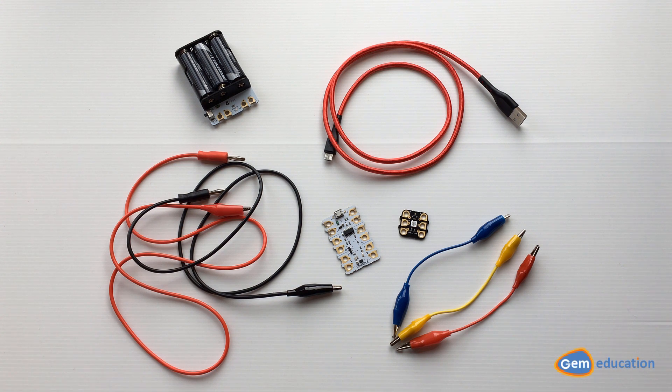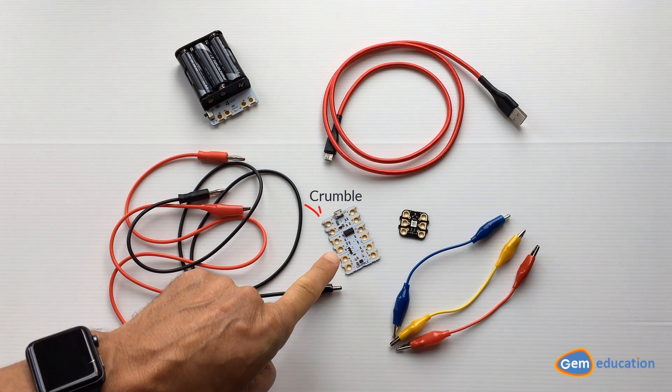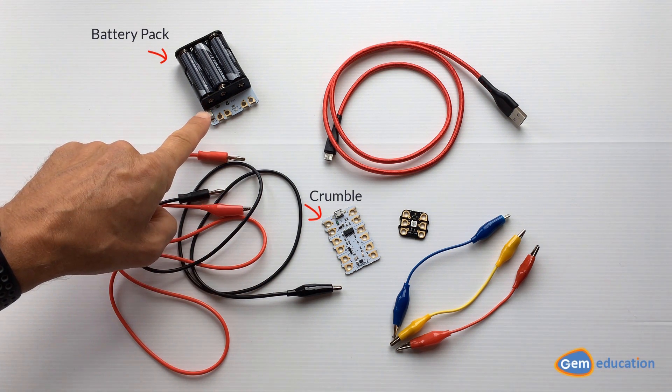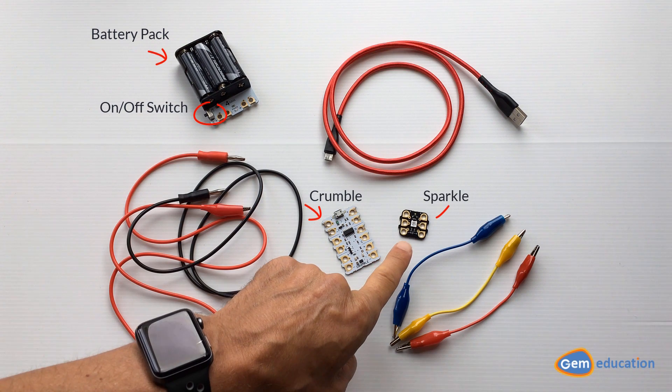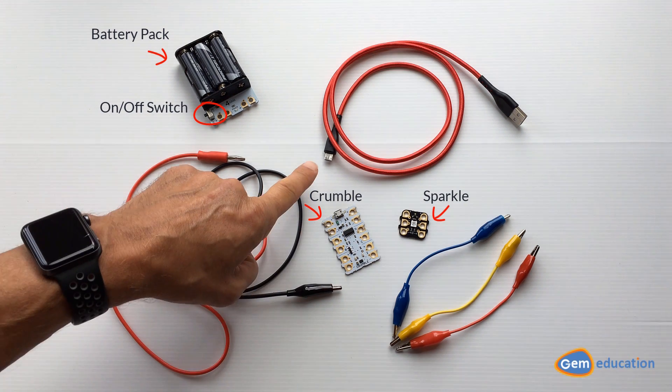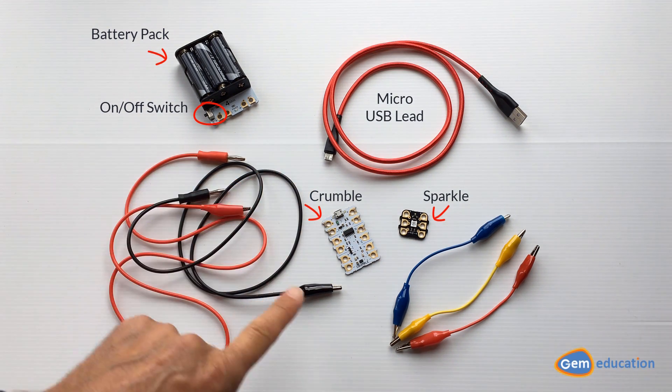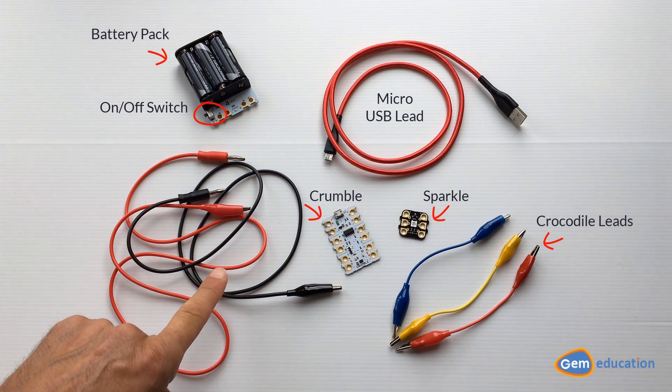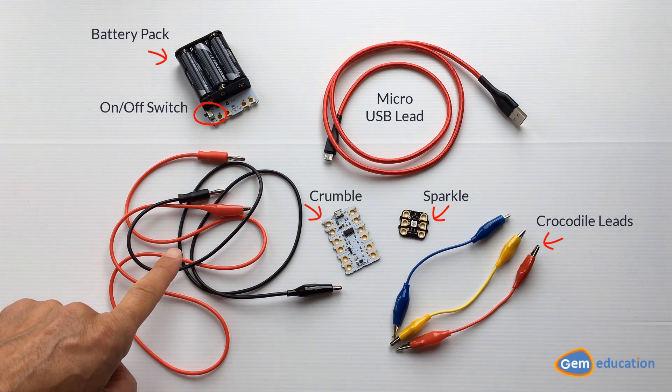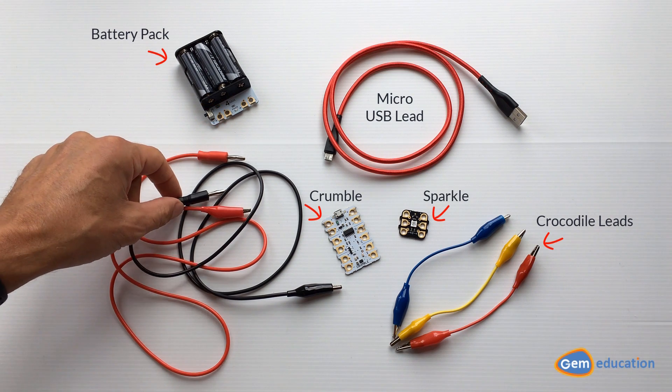I'm going to show you how to connect your crumble with different bits from your starter kit. I've got my crumble controller, battery pack, one sparkle, micro USB lead, and five crocodile clips. I've actually swapped two of my crocodile clips for some longer leads.